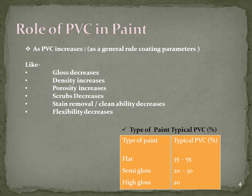Stainability increases — anything can penetrate through a film that has more porosity. Things like lipstick, alcohol, wine, and coffee can easily penetrate through the film and won't be removed easily. Flexibility also decreases, because flexibility depends on the resin — how much the film resists force. Since there is less resin, flexibility automatically decreases.